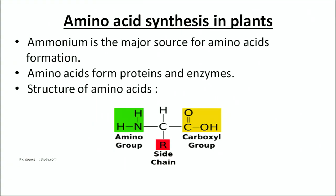Amino acid synthesis in plants: ammonium is the major source for amino acids, and amino acids form proteins and enzymes. The chief structure of an amino acid includes a central carbon atom, a hydrogen, a side chain or functional group, a carboxyl group on one side, and an amino group on the other side. The area of concern here is the amino group, as ammonium formed directly is involved in the formation of this amino group.